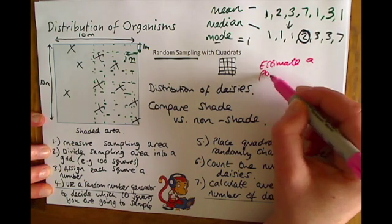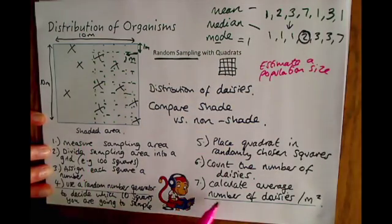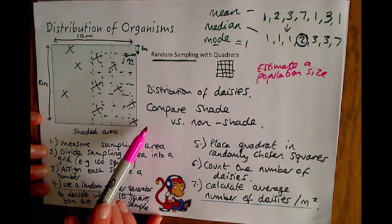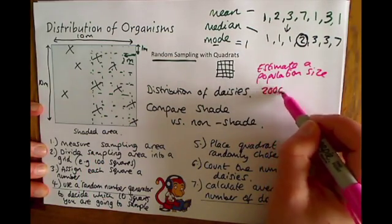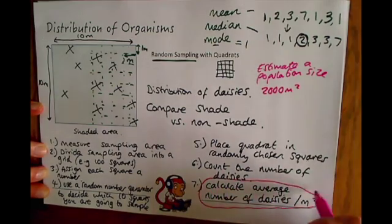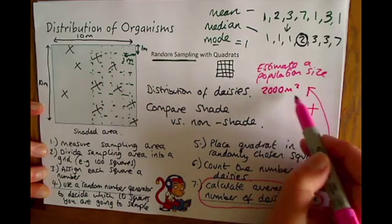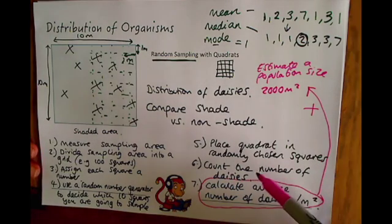One other thing you might need to do is calculate or estimate a population size. For example, if you'd calculated an average number of daisies per meter squared in shady grassland, the question might ask what is the total number of daisies you would expect in 2,000 square meters of shaded grassland. In that case, you take your average number of daisies per meter squared and multiply that by the area they've given you, times 2,000. That will give you an estimate for the total number of daisies in a particular population size.